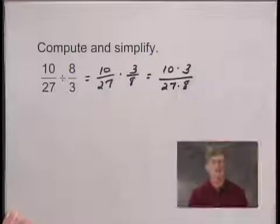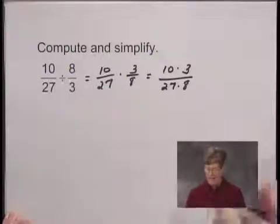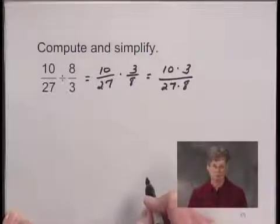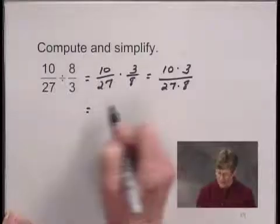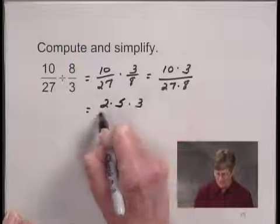Before we carry out these multiplications, we need to see if we can do some simplifying. To get started, we'll factor the factors in the numerator and in the denominator. I can write 10 as 2 times 5, so in the numerator I have 2 times 5 times 3.